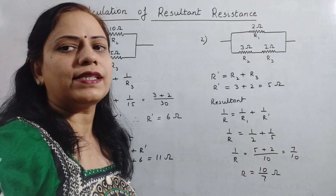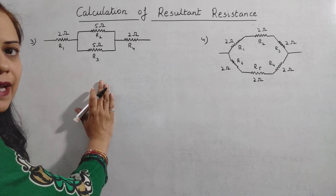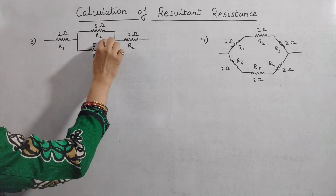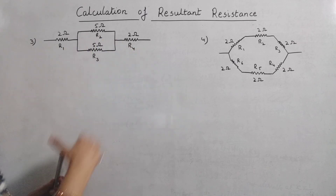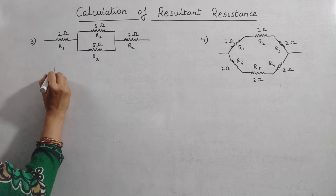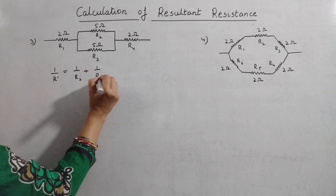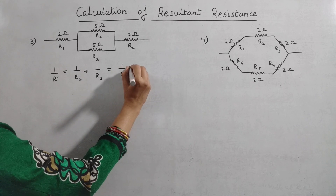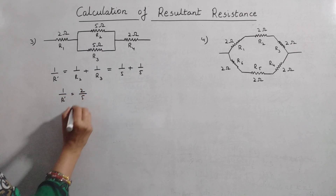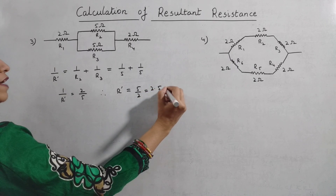We will take up two more questions of the same type. In the third question, as you can see in the diagram, R2 and R3 are connected in parallel and their resultant is in series with R1 and R4. First we calculate the resultant of R2 and R3 using the parallel formula: 1 upon R' is equal to 1 upon R2 plus 1 upon R3. Substituting the values, 1 upon R' equals 2 by 5, so R' is 5 by 2, that is 2.5 ohms.